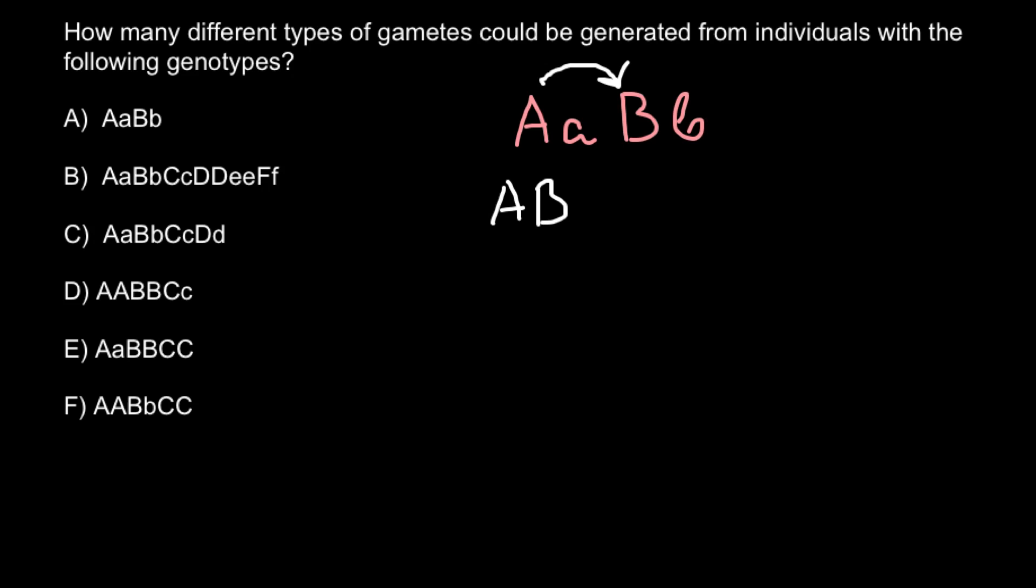The second one can be capital A and small b. The third one can be small a and capital B. And the fourth one would be small a and small b gamete.